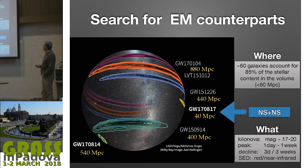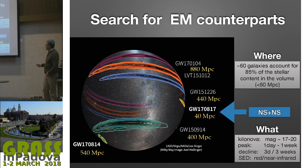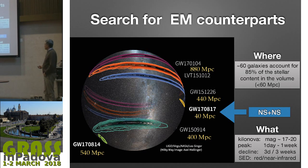Our search is in a volume, not just in an area, so a constraint on distance is crucial. This was indeed the case for the August event: by having a constraint on the distance, we could limit the number of galaxies to search to just 60 galaxies, more or less—and that made all the difference. We also knew we were looking for something in a certain magnitude range, which also helped.